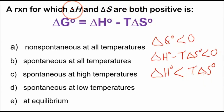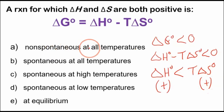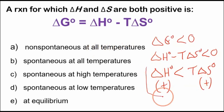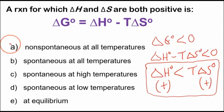We have the change in enthalpy positive, and the change in entropy — this is for the system since there's no subscript — is positive as well. Is it non-spontaneous at all temperatures? Well, this criteria for spontaneity holds as long as the temperature is large. If the temperature is very large, then T·ΔS is greater than ΔH and the reaction is spontaneous. So it's not non-spontaneous at all temperatures.